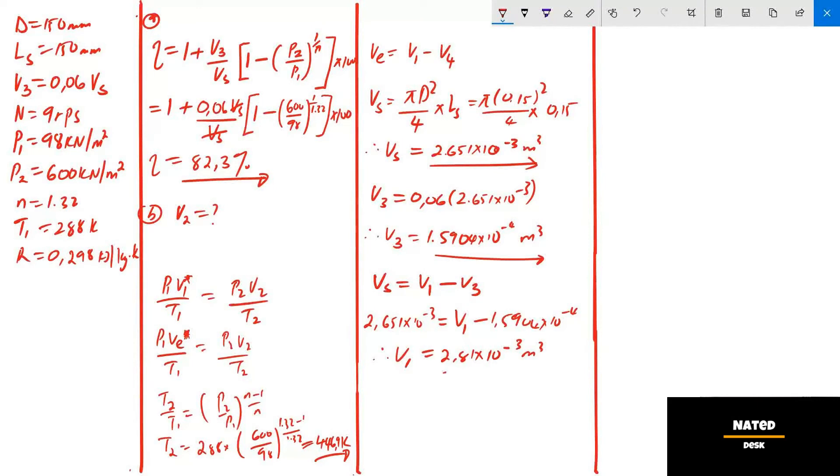From this formula, the unknown volume is V4. Let's calculate V4. V4 equals V3 times open bracket P3 divide by P2 close bracket to the power 1 over N. In this formula, P3 equals P2 and P4 equals P1. On the previous video we covered why these pressures are the same. Now let's substitute V3 and the pressures.